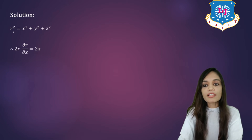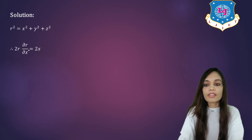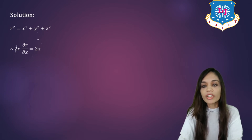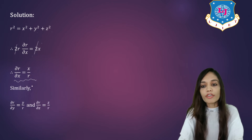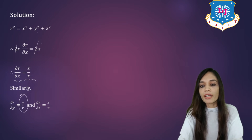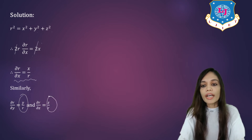In the solution, we are again given r square is equal to x square plus y square plus z square. Finding the derivative with respect to x gives del r by del x equal to x upon r. Similarly, del r by del y equals y by r and del r by del z equals z by r.